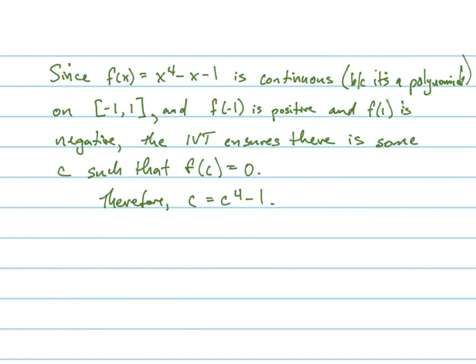So since that function is continuous, and we're giving our reasoning in parentheses there because it's a polynomial, on the interval from negative one to one, and since F of negative one is positive while F of positive one is negative, the intermediate value theorem ensures that there is some c, some value of c, such that F of c equals zero.